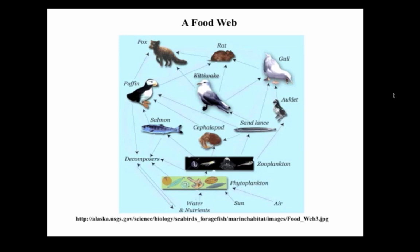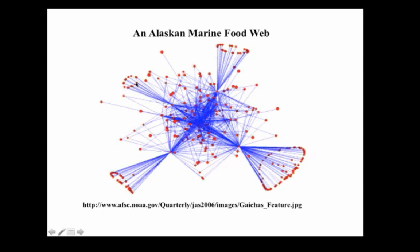Here's another kind of network: a food web. Each node in the network is a particular group of species, and the arrows represent who eats whom. For example, foxes are at the top of this particular Alaskan food web since they eat several kinds of animals but nothing eats them, at least not on this chart. Here's an abstract diagram of an even more complicated food web from the Gulf of Alaska. When we talk about networks later in the course, we'll see very interesting examples of decentralized self-organization in food webs and other kinds of networks.